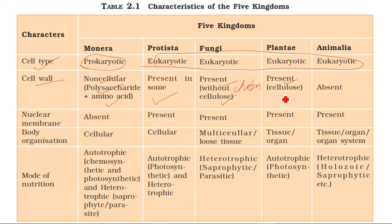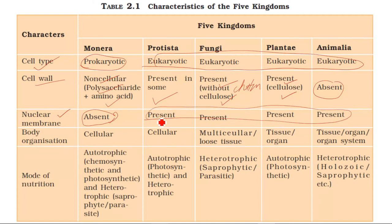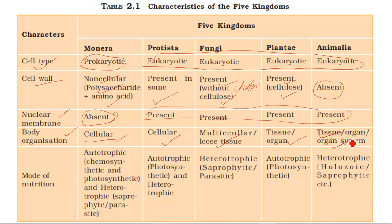All eukaryotes have a nuclear membrane present. In terms of organization levels: Protista is at the cellular level and is unicellular. Fungi is multicellular with loose tissue organization. Plantae has tissue and organ system level organization. Animalia has tissue, organ, and organ system — this is a complex system.